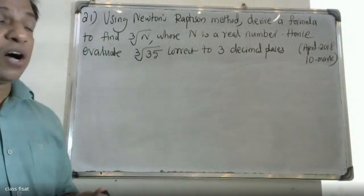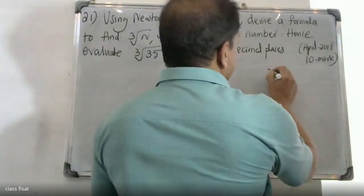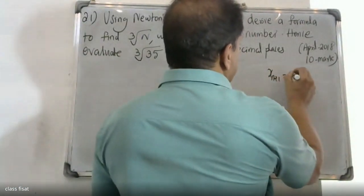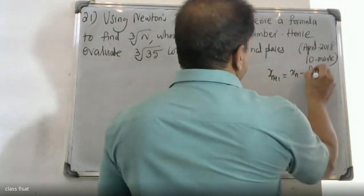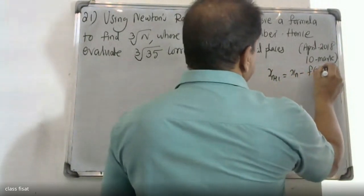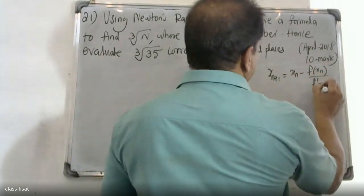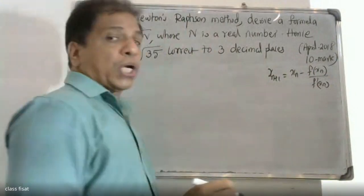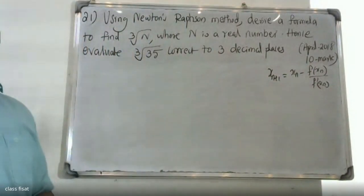Newton-Raphson method. The iterative formula is: x_{n+1} = x_n minus f(x_n) divided by f'(x_n), where f'(x_n) ≠ 0, for n = 0, 1, 2, 3, etc.